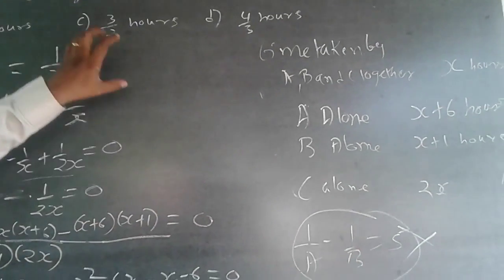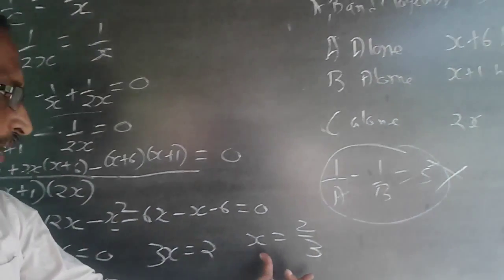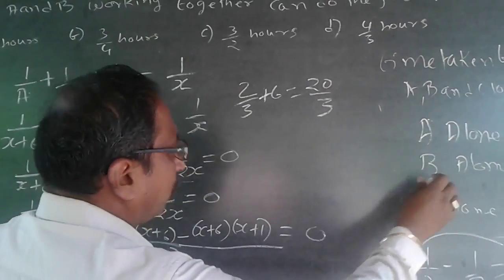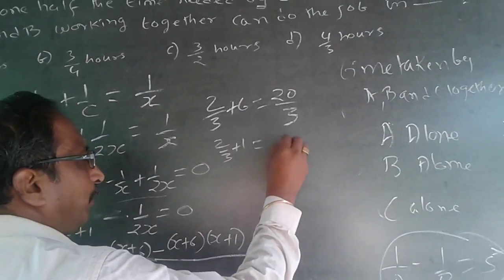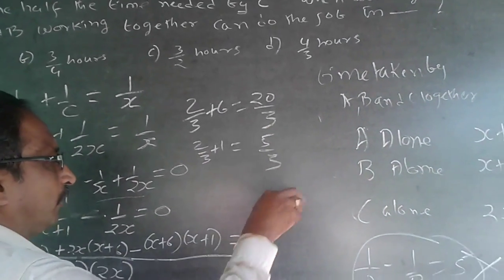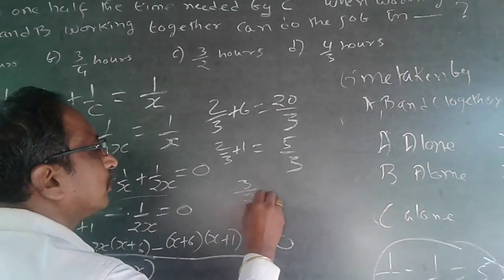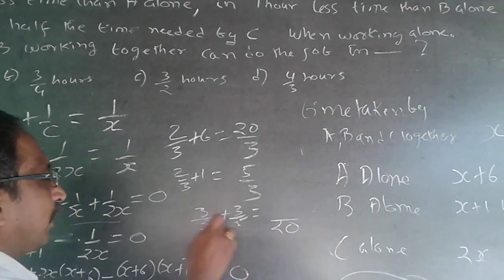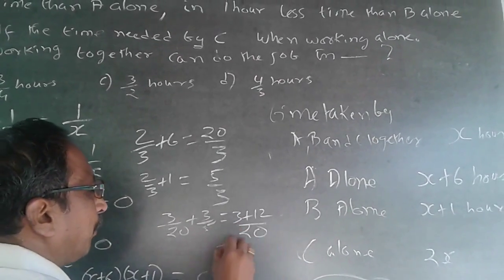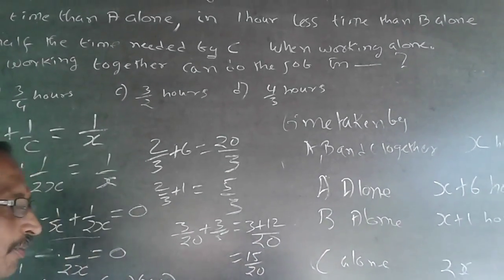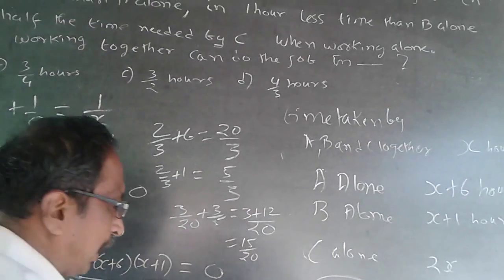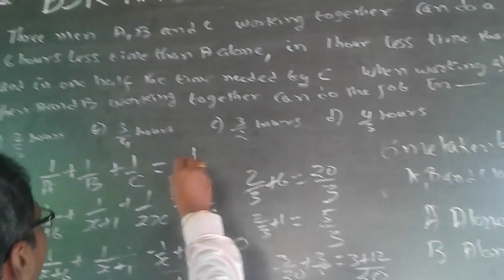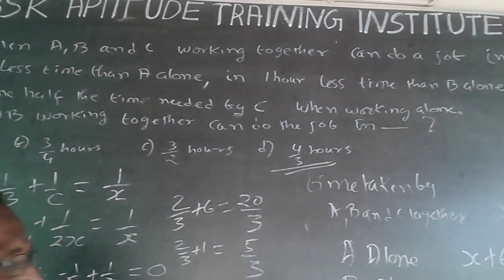Now A alone takes x + 6 = 2/3 + 6 = 20/3 hours, and B alone takes x + 1 = 2/3 + 1 = 5/3 hours. When A and B work together, their combined work per hour is 3/20 + 3/5. With LCM 20, this gives (3 + 12)/20 = 15/20. So they require 20/15 = 4/3 hours. The answer is 4/3 hours, which is option D.